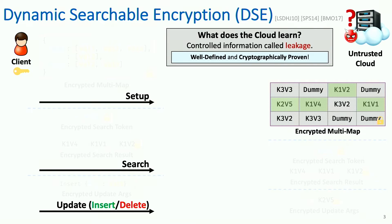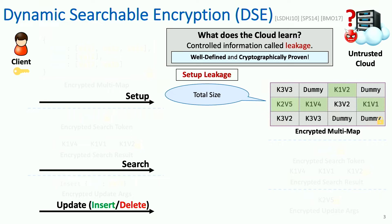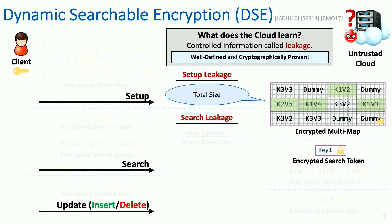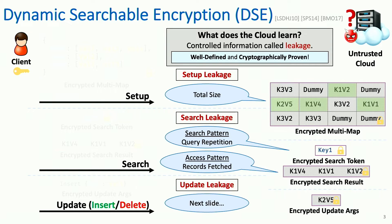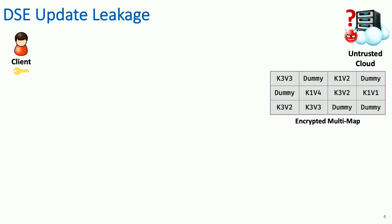The cloud in this scenario only learns something called leakage, which is very strictly controlled. It should be well-defined and proven cryptographically, and it boils down to three parts, one for each protocol. There is setup leakage, which usually boils down to only the total size. Then there's search leakage: search pattern, query, and access pattern. And finally, there's update leakage, which is a little more complicated, so I'll give it a whole slide.